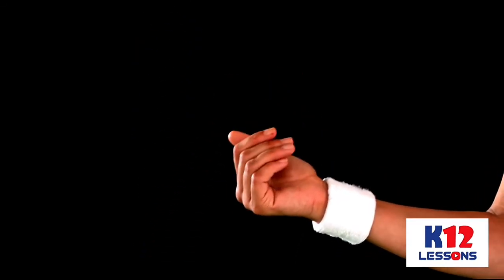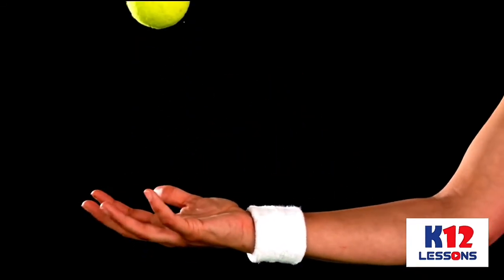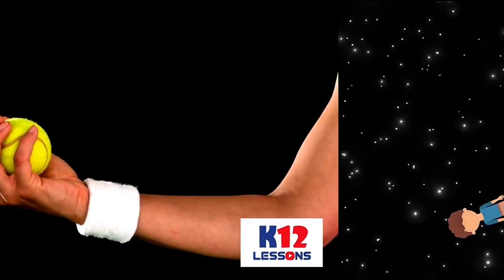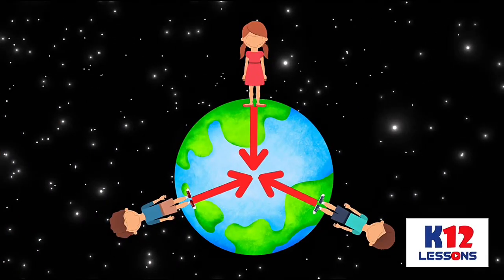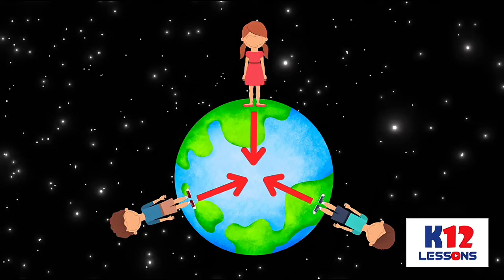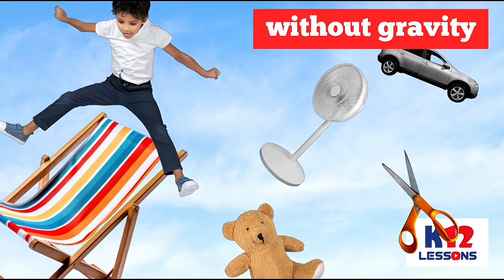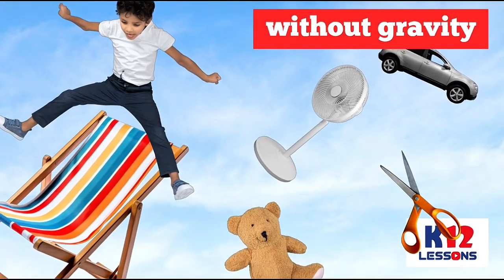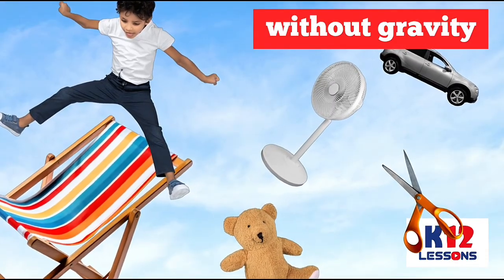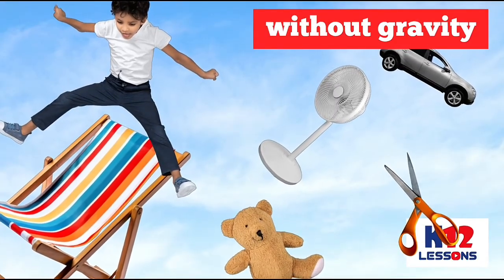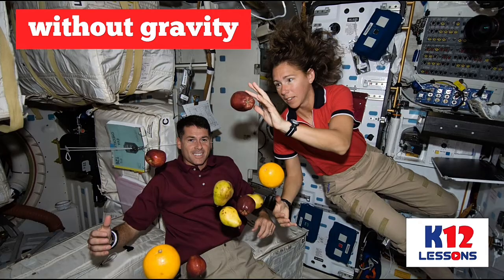Objects that are thrown upward on Earth eventually fall down. This is because the Earth is exerting an attractive force on us and on all things around us. Without gravity, everything on the Earth's surface will float in the atmosphere, just like astronauts floating in their spaceship.